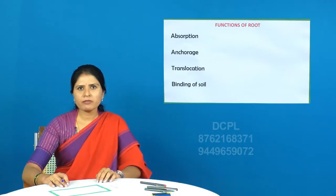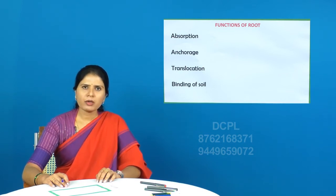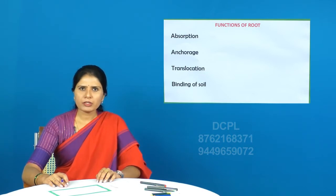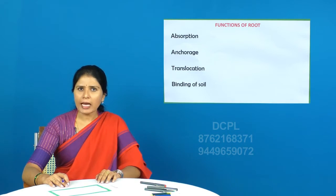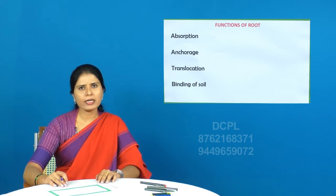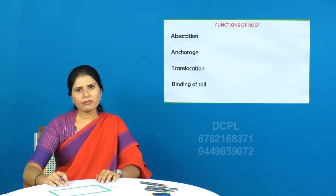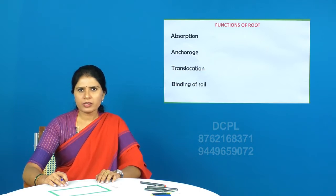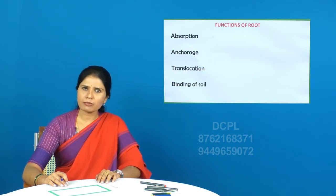Now you are familiar with the different parts of roots and also different types of roots. Now we will move on to the functions of roots. Predominantly there are two types of functions which are very important for a root: anchorage and absorption. Apart from that, roots also possess other functions as well, but predominantly it is anchorage and absorption.